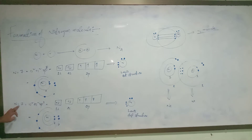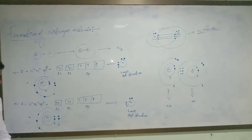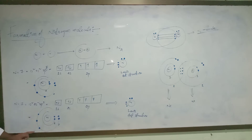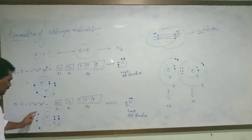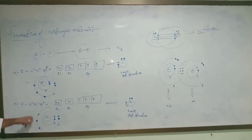Same for the second nitrogen atom — atomic number is 7, electronic configuration is 1s², 2s², 2p³. This is one nitrogen atom and this is another nitrogen atom. When these two nitrogen atoms are combined together, a nitrogen molecule, N₂, is formed.